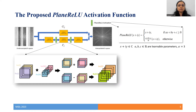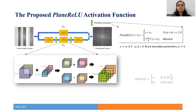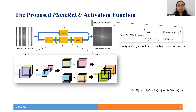To understand the motivation behind our proposed activation function, we examine the limitations of existing complex-valued activation functions. The mod-ReLU applies ReLU on the sum of the magnitude and a learnable parameter b, taking its firing decision based on input magnitude information only. The z-ReLU fires the input if the input phase lies between 0 and pi/2, taking its firing decision only based on input phase. The c-ReLU applies the real ReLU independently to the real and imaginary parts of the input, which leads to a distortion of the input phase.